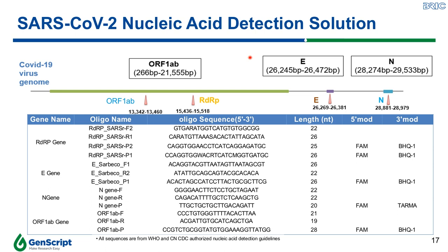To accelerate assay development, both the China CDC and WHO have suggested targeting three genes in the SARS-CoV-2 viral genome: the ORF1AB gene, the E gene, and the N gene. There are two different targeted locations in the ORF1AB gene — the ORF1AB region and also the location encoding RNA-dependent RNA polymerase. These are the sequences for the primers and probes to target these four locations, as released by WHO and the China CDC.